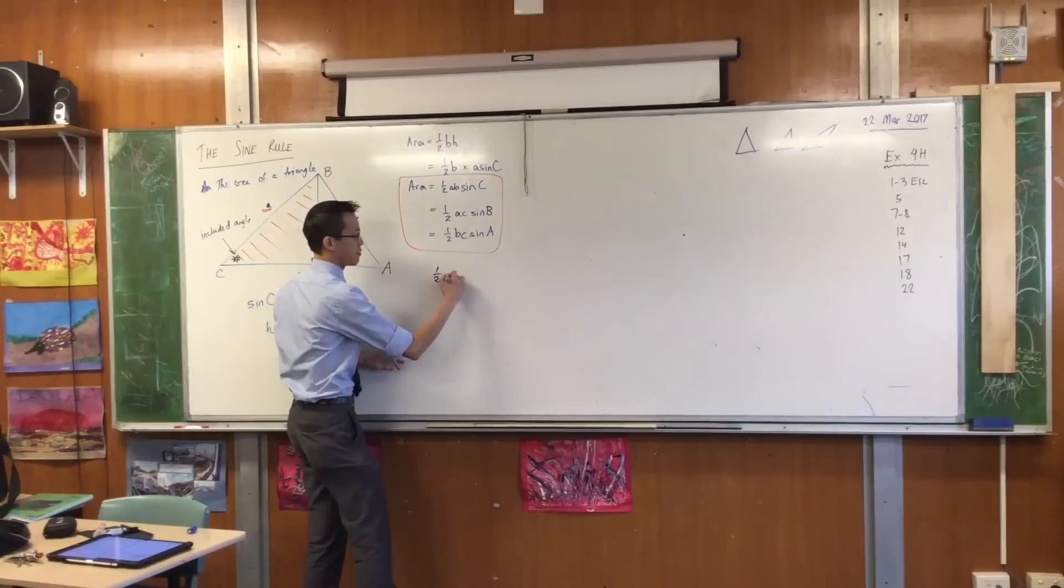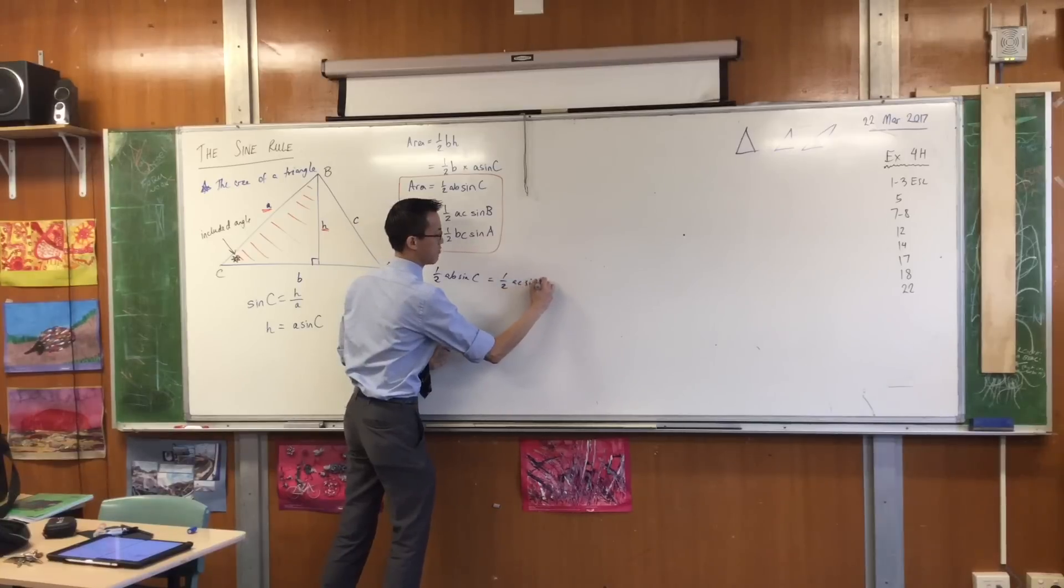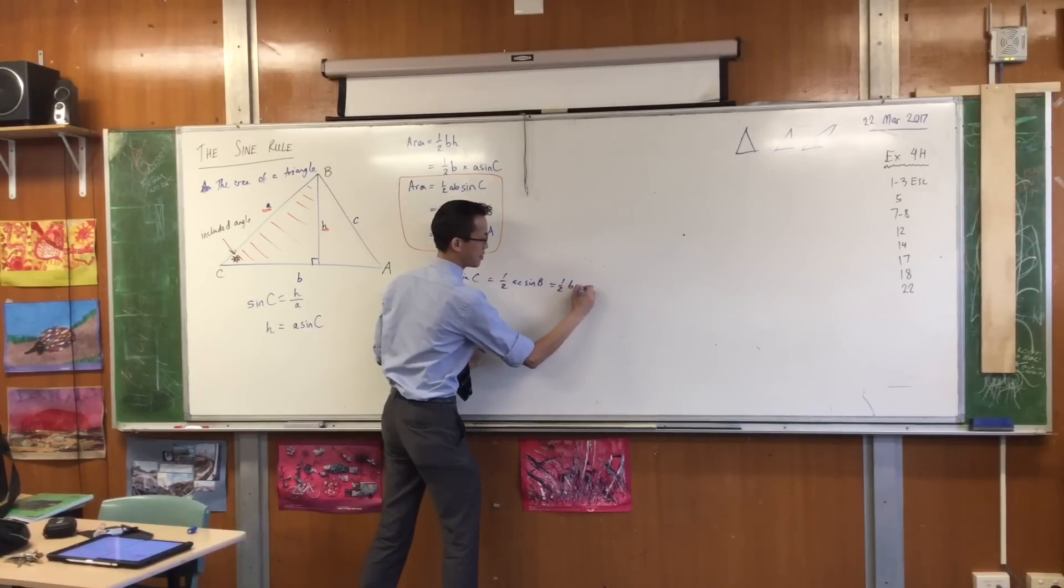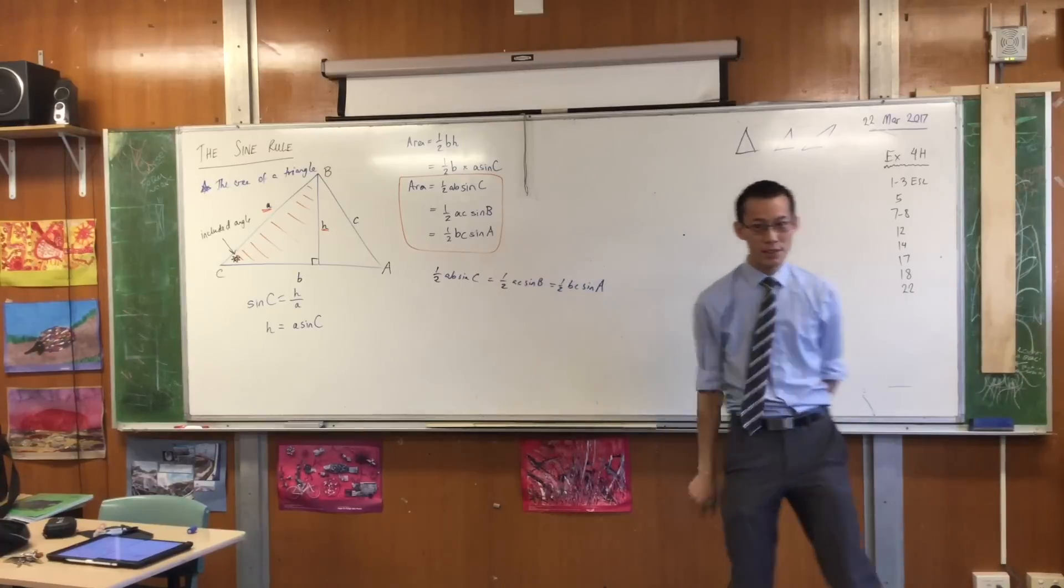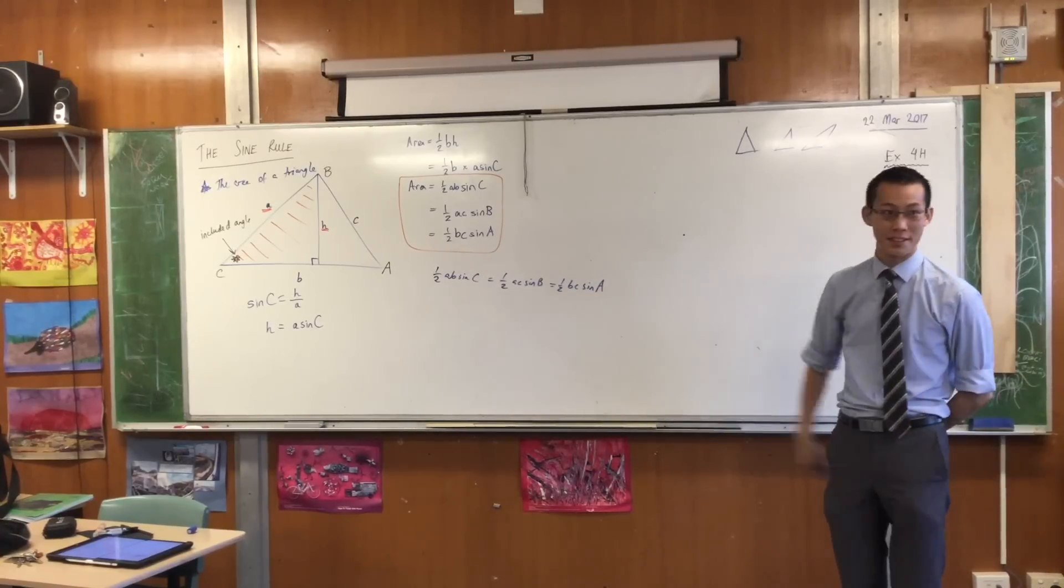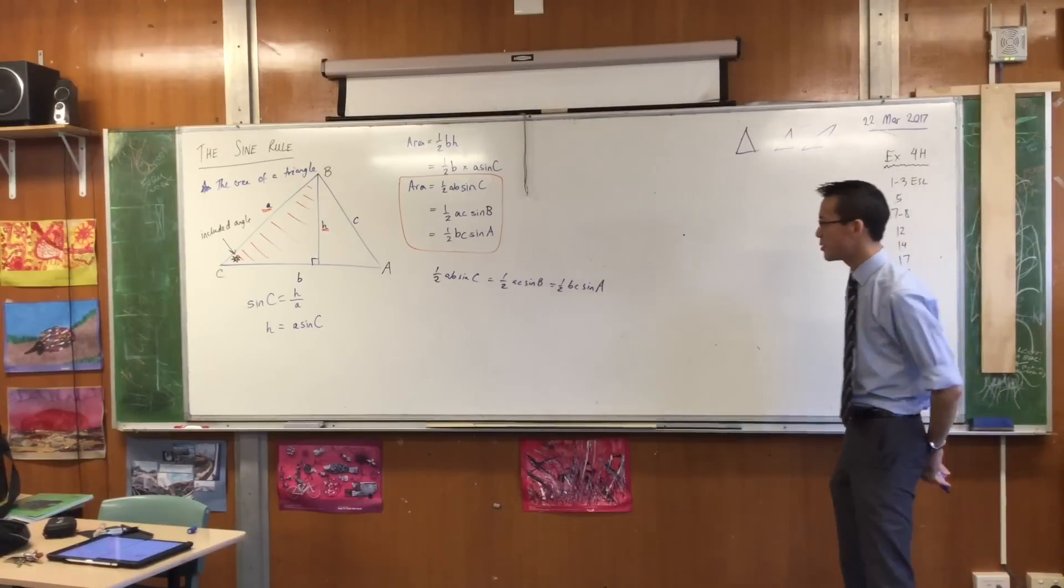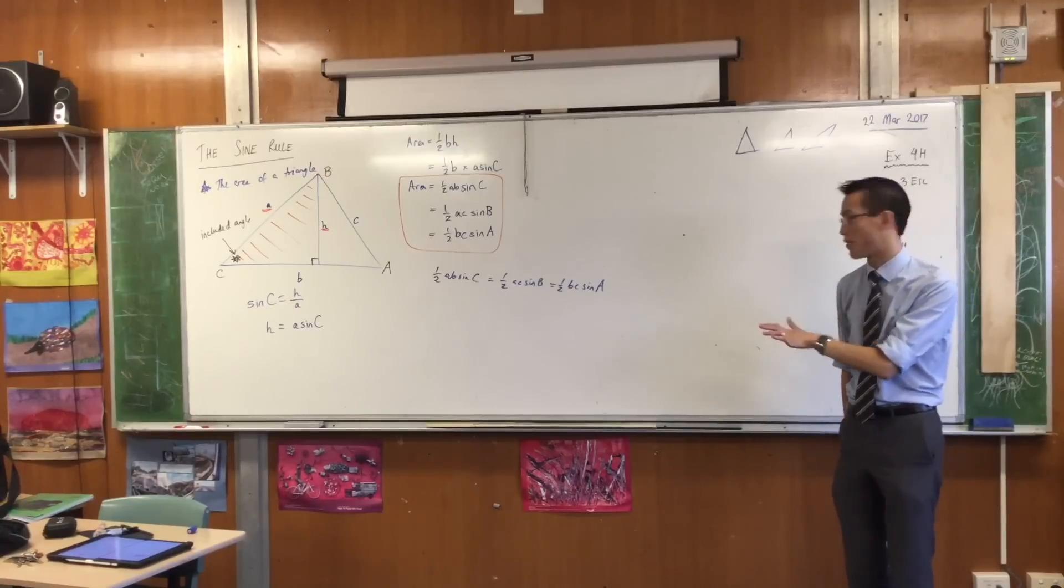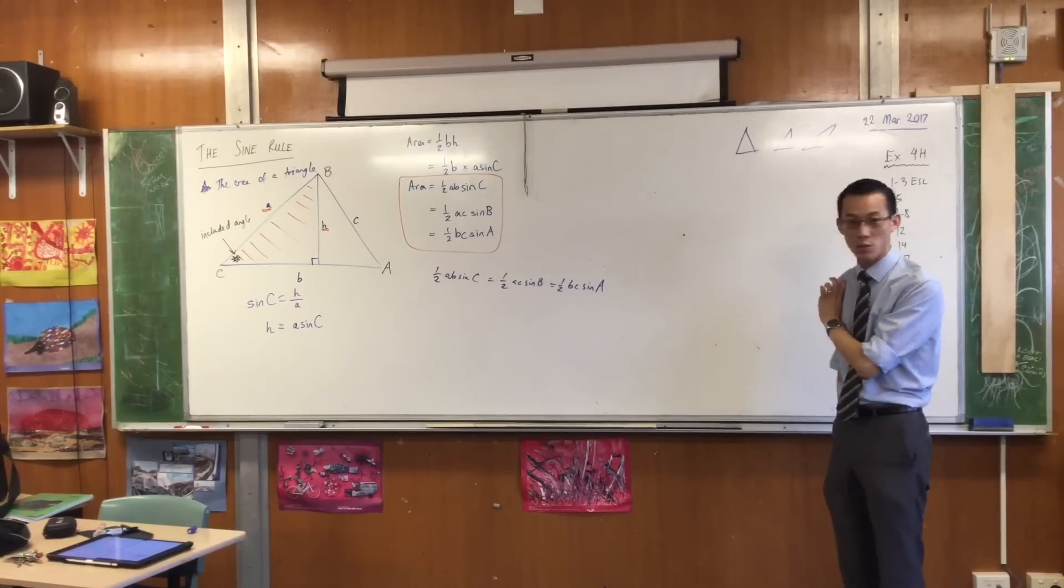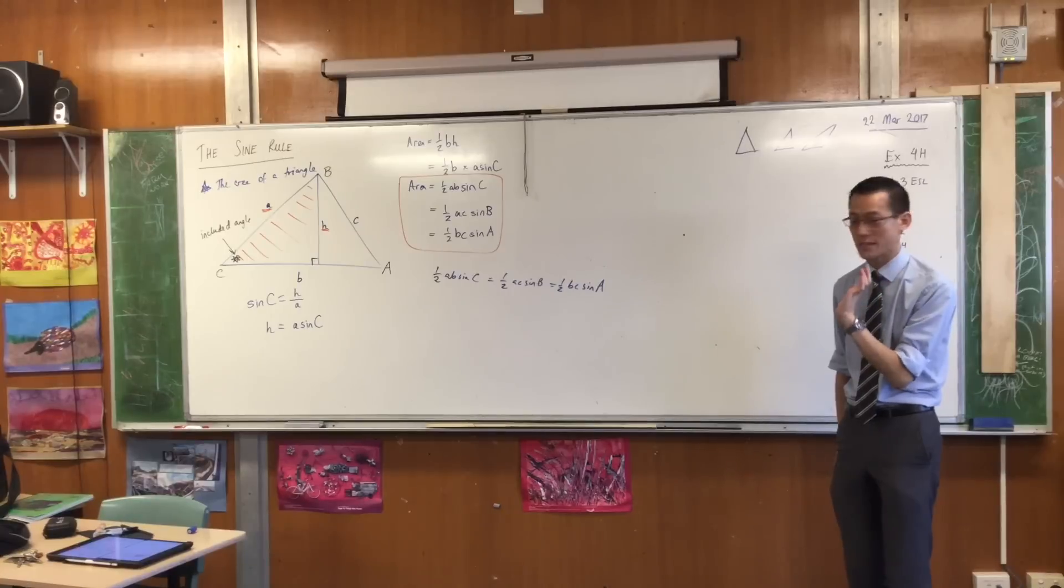I'm going to write half AB sine C is half AC sine B is half BC sine A. I'm literally one step away from the sine rule once I've written this down. Have a look. Do you see, there's some common factors here. There are some things which aren't common, but if I divide through by them anyway, I'll get something nice and neat.